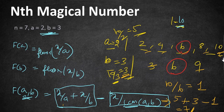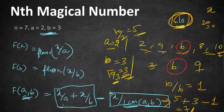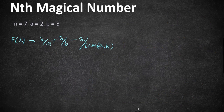So from this formula, given x = 10, we found that 10 is the seventh magical number. This means if we supply any random number x to this formula, we can easily determine which position it holds in the magical number series — for example, 10 is the 7th magical number for the given a and b.